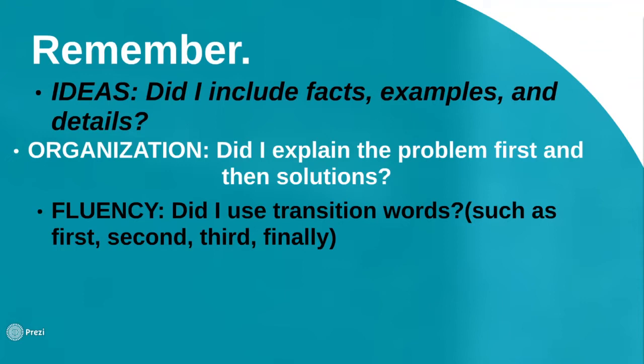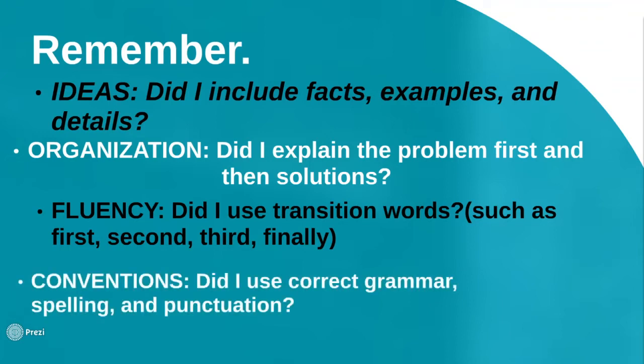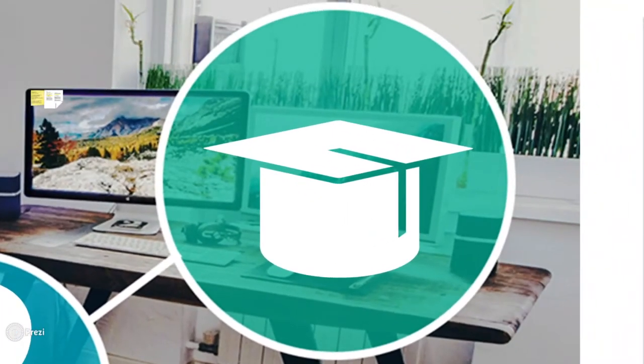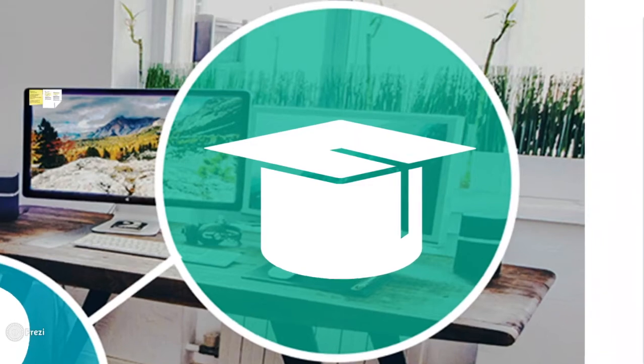Remember to write transition words: finally for your last solution. Fourth: Conventions — make sure you use correct grammar, spelling, and punctuation. So remember these four criteria: ideas, organization, fluency, and conventions. Now I'm going to give you an example of a problem-solution essay based on page 517 of your Journey's Big Book.